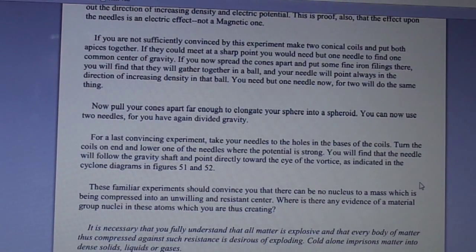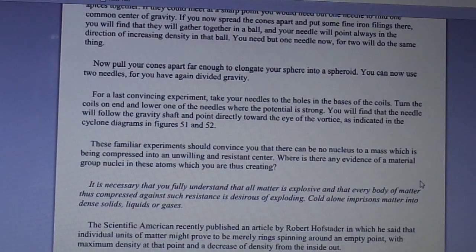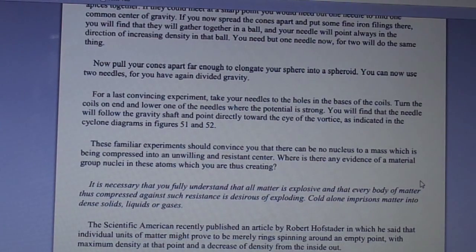For a last convincing experiment, take your needles to the holes in the bases of the coils. Turn the coils on end and lower one of the needles where the potential is strong. You will find that the needle will follow the gravity shaft and point directly toward the eye of the vortex, as indicated in the cyclone diagrams in Figures 51 and 52. These familiar experiments should convince you that there can be no nucleus to a mass which is being compressed into an unwilling and resistant center. Where is there any evidence of a material group nuclei in these atoms which you are thus creating?